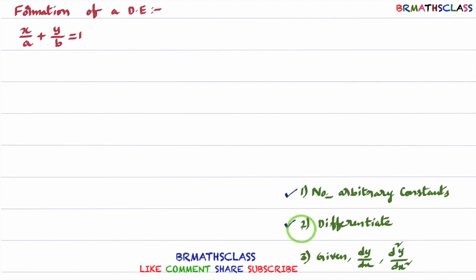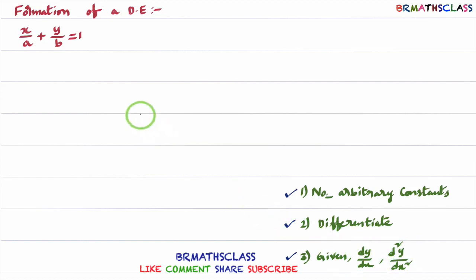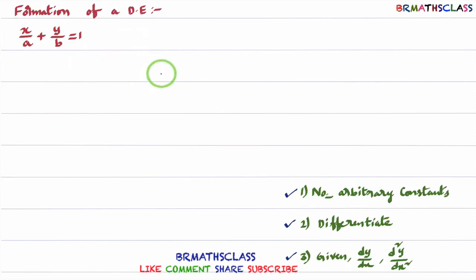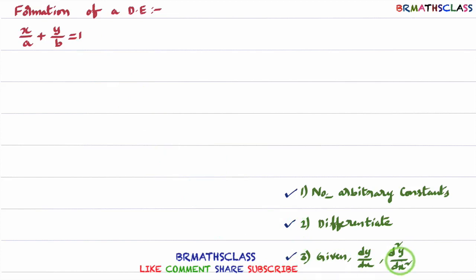After these two steps, if arbitrary constants are not yet eliminated, then we use the given curve along with what we got after first and second time differentiation to eliminate the arbitrary constants. To summarize: first identify the number of arbitrary constants, differentiate that many times, and try to eliminate the arbitrary constants in the process. If they are not yet eliminated after those steps, use all available equations.